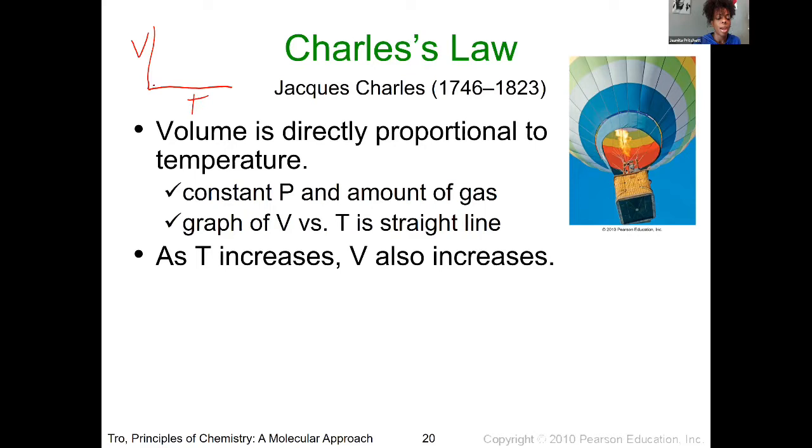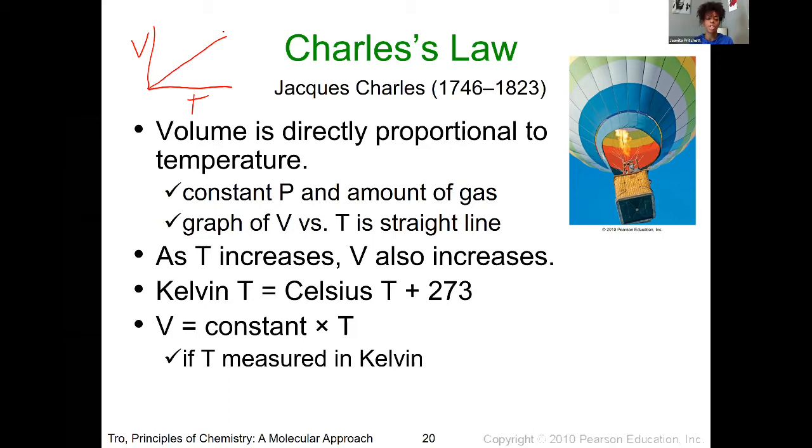Now important to remember when you're doing Charles Law problems is that the temperature must be in Kelvin. And so back in chapter one, we learned how to actually calculate your Kelvin number. And so you're just going to simply add that 273 or 273.15 if your number has decimals in it.